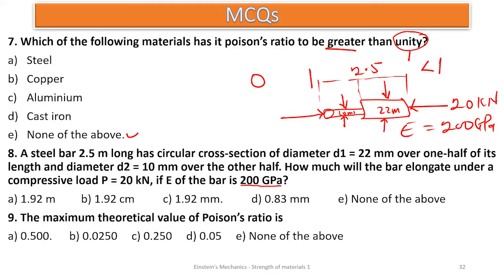Number eighteen: determine the diameter of a solid steel shaft that can transmit 50 kilowatts at 60 rpm if the maximum shear stress is not to exceed the given value. Power = 2πNT/60, so solve for T. Then use τ = 16T / (πd³), make d³ the subject, take the cube root, and remember to convert to centimeters. The answer is 9.32 cm.